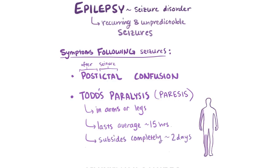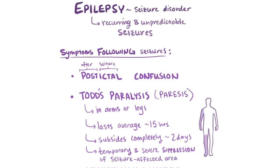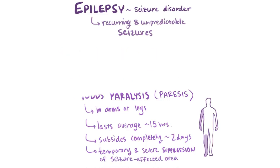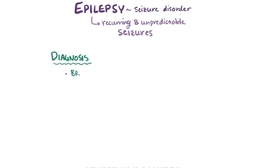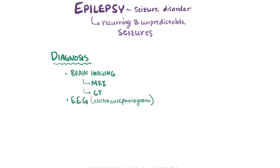The precise mechanism behind Todd's paralysis isn't currently well understood, but it's thought to be the result of temporary but severe suppression of activity in the area of the brain affected by the seizure. Typically after a seizure is over, patients will have brain imaging like MRI or CT scans, as well as an EEG — or electroencephalogram — which detects electrical activity in the brain.